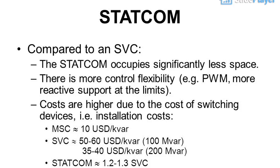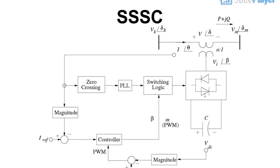Costs are higher due to the cost of switching devices, i.e., installation costs. MSC: ~10 USD/kVAr. SVC: 50–60 USD/100 MVAr, 35–40 USD/200 MVAr. STATCOM: 1.2–1.3 times SVC cost.